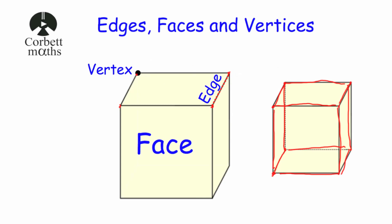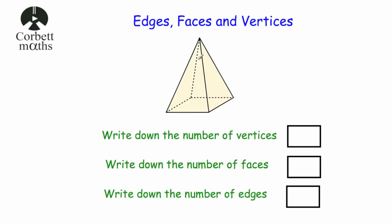And that's it. Okay, let's have a look at some typical questions. So here we've got a square-based pyramid. You can see the square on the bottom, and then it's got four triangles — one, two, three, four — joining up to the top of the square-based pyramid.